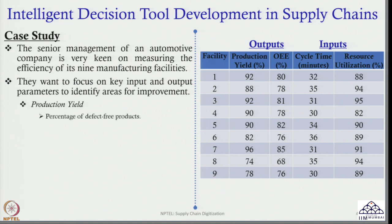With that objective in mind, they collected output and input parameters. The first output parameter is production yield, measured as the percentage of defect-free products. Facility 1 has 92% production yield, facility 2 has 88%, facility 3 has 92%, and facility 7 has the highest at 96% defect-free products, while facility 8 is doing worst as far as this output is concerned.